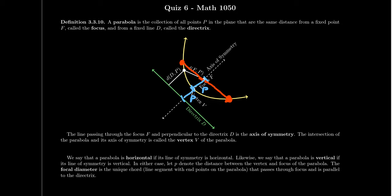If we look at the endpoints of the focal diameter, the distance between those endpoints to the directrix will be the same as the distance from the focus to the directrix, which would be 2P. Therefore the distance from the focus to the endpoints of the focal diameter would likewise be 2P. Because of symmetry we see that on both sides. Therefore when you put the focal diameter together, the diameter has a girth of 4P. That'll come up again in just a second.